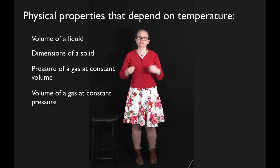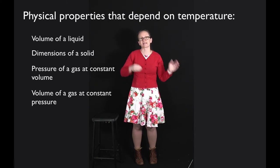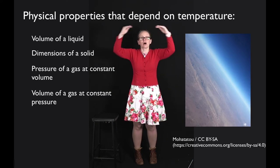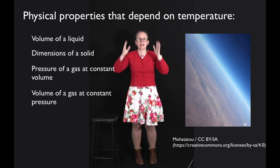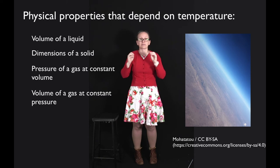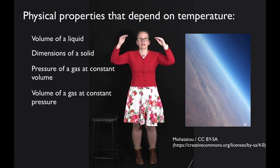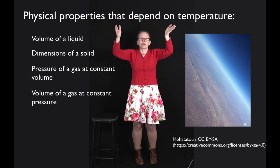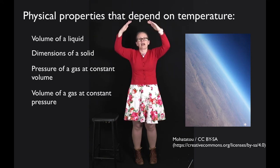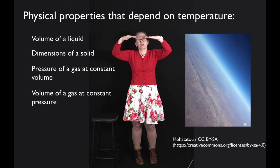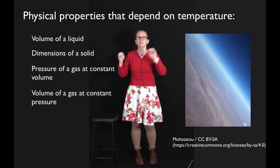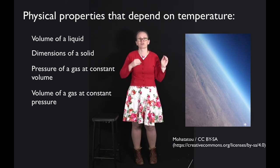Another property that changes with temperature is the volume of a gas at a constant pressure. A nice example of this is the Earth's atmosphere. During the day, as gas molecules in the atmosphere heat up, they travel more quickly and the top of the Earth's atmosphere actually rises. Overnight, the temperature decreases, the gas molecules slow down, and the top of the atmosphere comes closer to the surface of the Earth. The atmosphere is kept at a constant pressure because the pressure is created by the gravitational force of the Earth on the gas molecules.